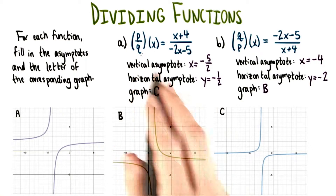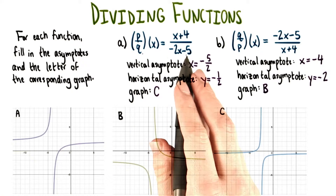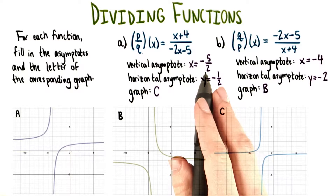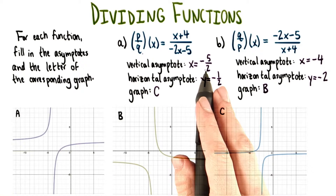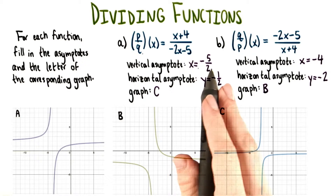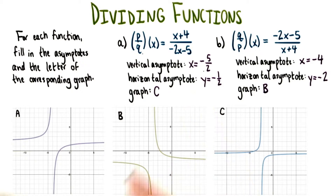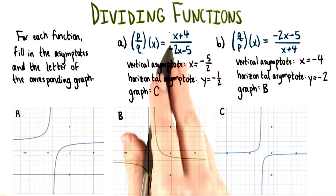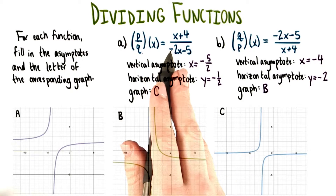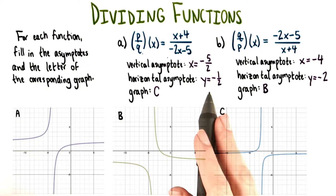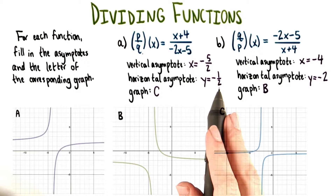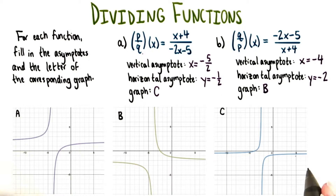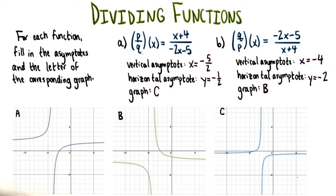For the function p over q, we can see from the denominator that the vertical asymptote is x equals negative 5 halves. The horizontal asymptote from our leading coefficients is y equals negative 1 half. The graph that has these asymptotes is graph C right here.